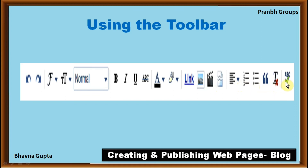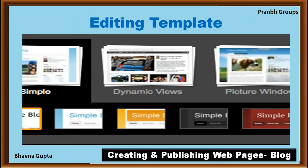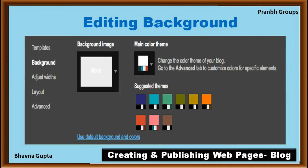There is also a spell check button. Next, using the post settings menu: from the menu on the left side of the page, select 'Template' and then select 'Customize'. Here you can change the template from the one you selected at the beginning. To edit the background, select 'Background' from the menu at the top left of the page, located directly under the template. To change the background image, click the drop-down arrow and select a preferred image. To change the color theme, click the drop-down arrow and select a suggested theme.